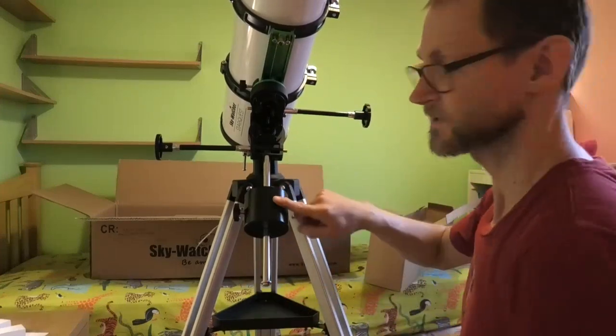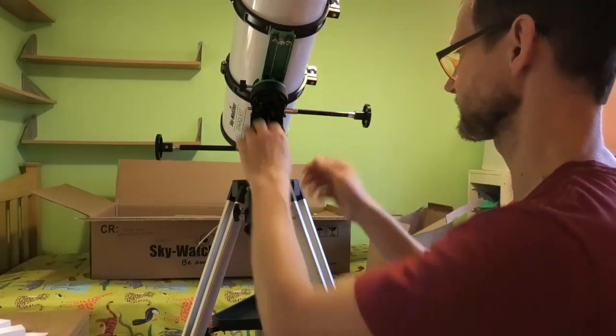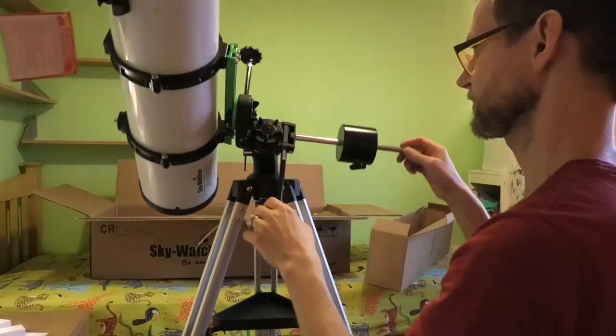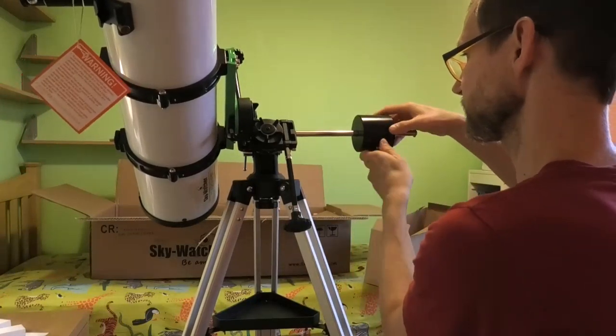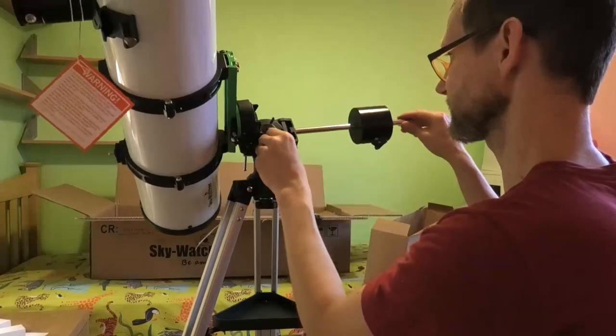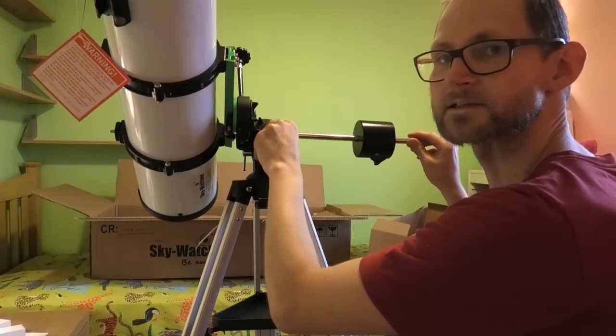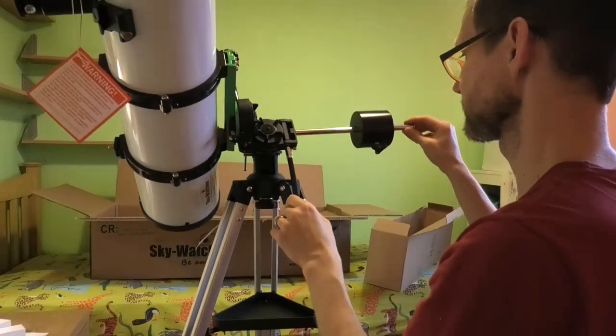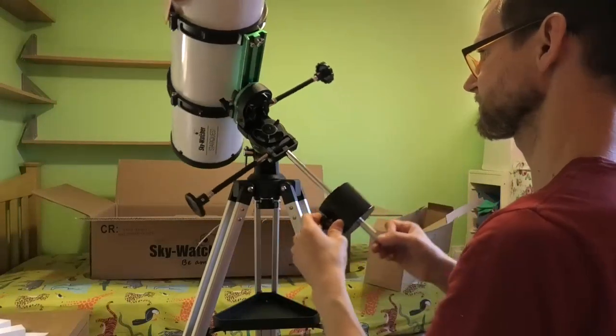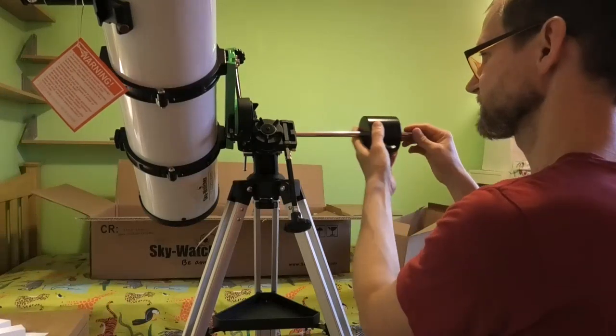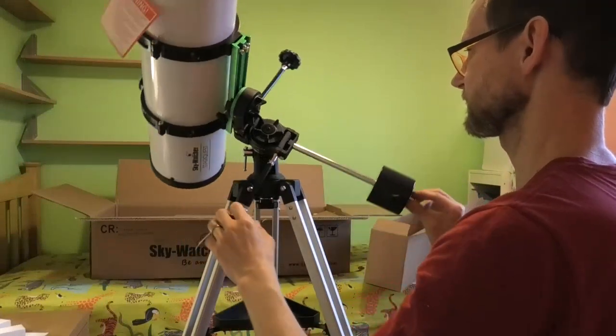So what we're going to do is we want to move this weight up and down the bar until it matches the weight of the optical tube in terms of balance. So if we undo that clutch, as you can see we can go sideways like that, and we want to move that along until it sits lovely and balanced. Now this has got a little bit of friction on it, so you're not going to get the balance super correct because it's held in place partly by the friction, which isn't a bad thing because obviously you can move it quite freely still and quite smoothly.